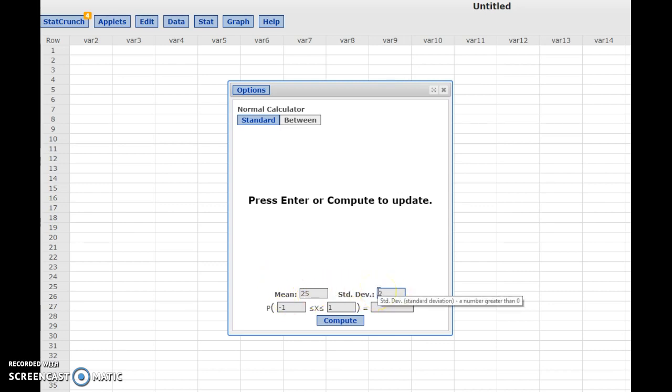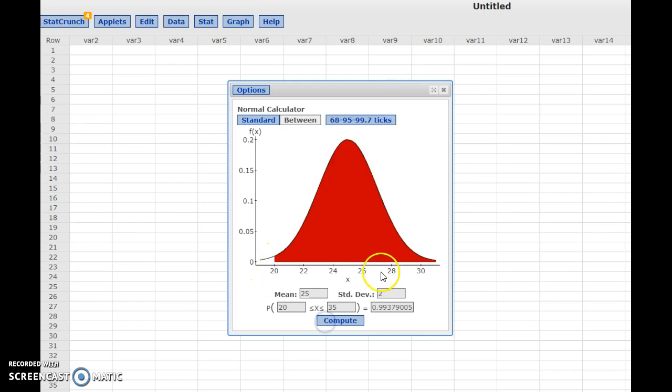Then I can find the area between two given points by typing those points in here. Say I want to know the area between the data values of 20 and 35. Here I type 20, my lower number, and 35, my higher number. And I see that the area between 20 and 35 is provided here. The area is 0.993.